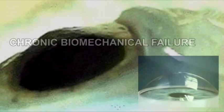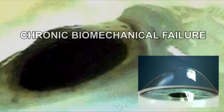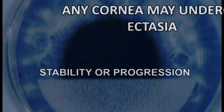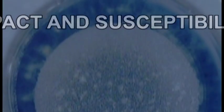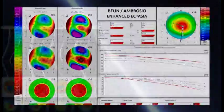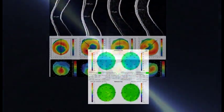Ectasia occurs due to a process of chronic biomechanical failure of the corneal stroma, causing its inability to support itself to the unremitting stress placed upon it. While any cornea may undergo ectasia, stability or ectasia progression will be determined by the combination of the impact from the procedure itself and the preoperative innate biomechanical properties of the cornea.